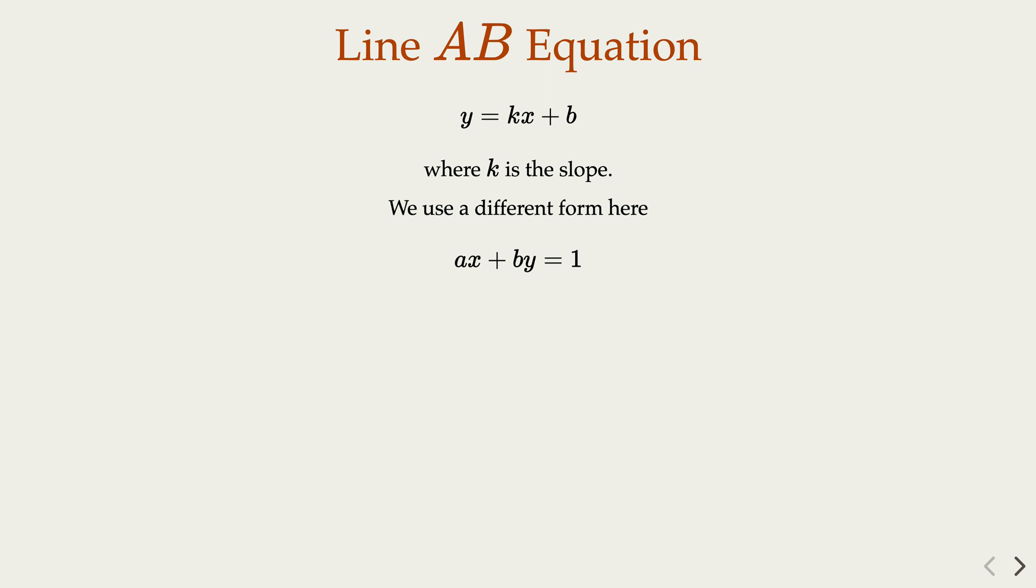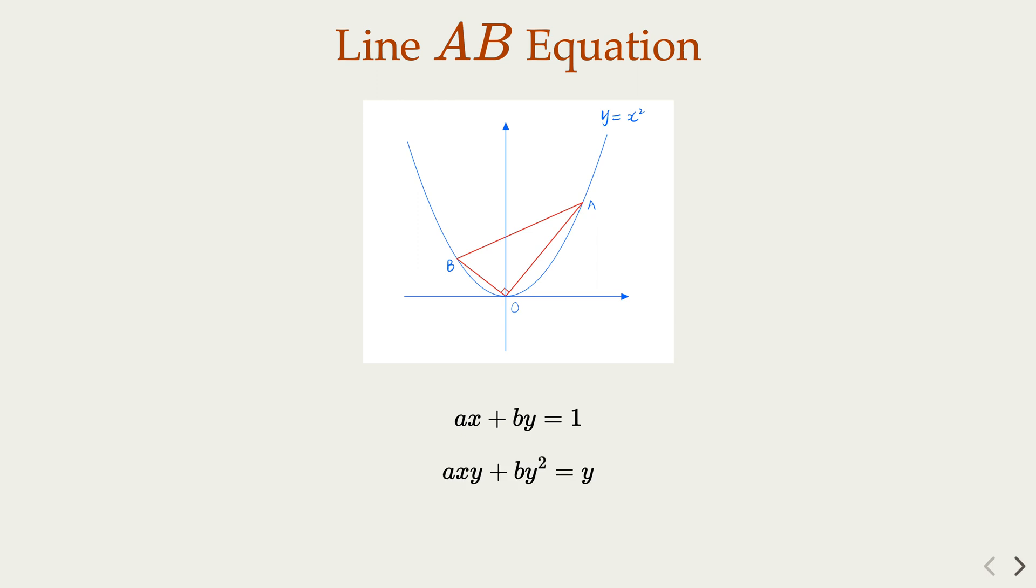Now with this formula of a straight line, what we can do is multiply y on both sides. Notice that y equals x squared. We're going to replace y on the right-hand side with x squared. That will become this one.